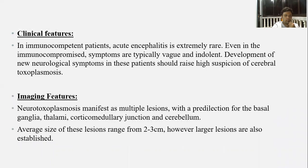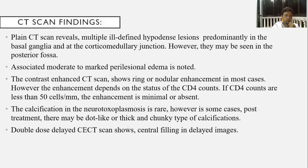Imaging features manifest as multiple lesions with a predilection for the basal ganglia, thalami, corticomedullary junction, and cerebellum. The average size of these lesions ranges from 2 to 3 cm; however, larger lesions are also reported. CT findings show multiple ill-defined hypodense lesions predominantly in the basal ganglia, thalami, corticomedullary junction, and rarely may involve the posterior fossa. It is associated with moderate to severe perilesional edema.